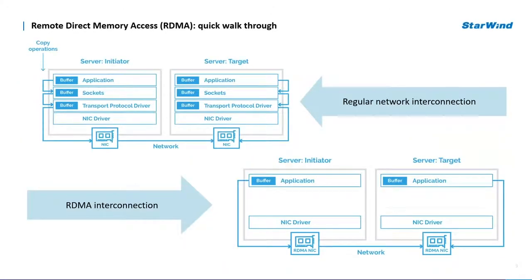Remote direct memory access, or RDMA, is a technology that allows computers in the network to exchange data stored in RAM memory without involving the CPU, cache, or operating system on both of the participants. RDMA improves the throughput and the performance because it decreases resource utilization. In addition, RDMA also facilitates a faster data transfer rate and low latency network.